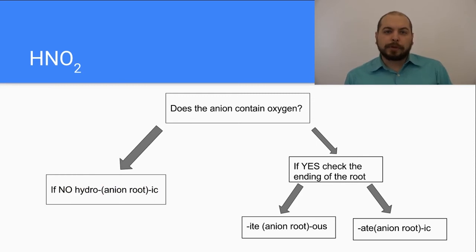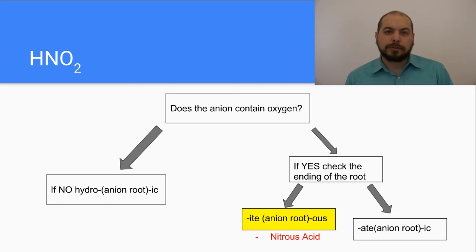So the next example we're going to look at is HNO2. Now HNO2, we look at the anion NO2 and we see that it does contain an oxygen. This means we're going to follow the flowchart down to the right. This is where polyatomic naming comes in because now we need to see that NO2, the name is nitrite. Nitrite means we follow the flowchart to the left and we see that it is going to be nitrous acid. So we use the root of nitrite, we replace the -ite with an -ous and we end up with nitrous acid. So therefore HNO2 is nitrous acid.